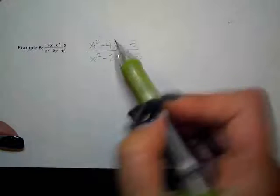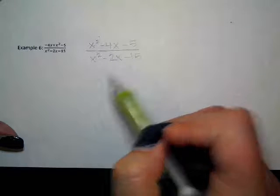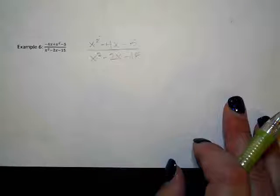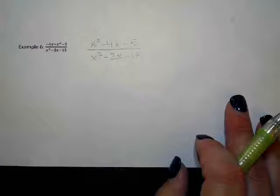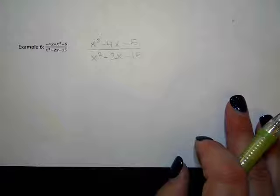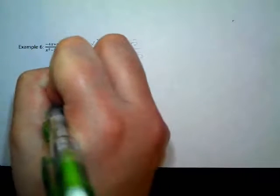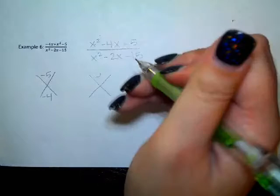So we've written it as numerator over denominator, put it in descending order, and now we're moving on to step three: write it in factored form. How do we factor both of these? These are our normal trinomials — regular factoring. We're looking for what multiplies to negative five but adds to negative four. We're looking for what multiplies to negative 15 but adds to negative two.